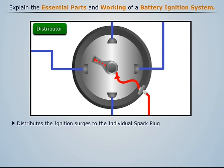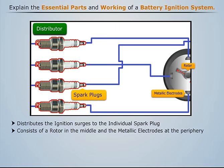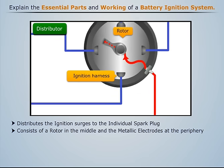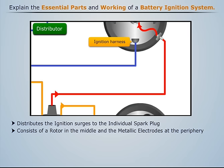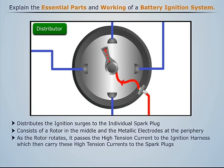A distributor is provided for distributing the ignition surges to individual spark plugs in the correct sequence and at the correct time. It consists of a rotor in the middle and metallic electrodes on the periphery. These metallic electrodes are directly connected to the spark plugs and are also known as ignition harnesses. The secondary winding of the ignition coil is connected to the rotor of the distributor, which is driven by the camshaft. As the rotor rotates, it passes the high-tension current to the ignition harness, which then carries these high-tension currents to the spark plugs.